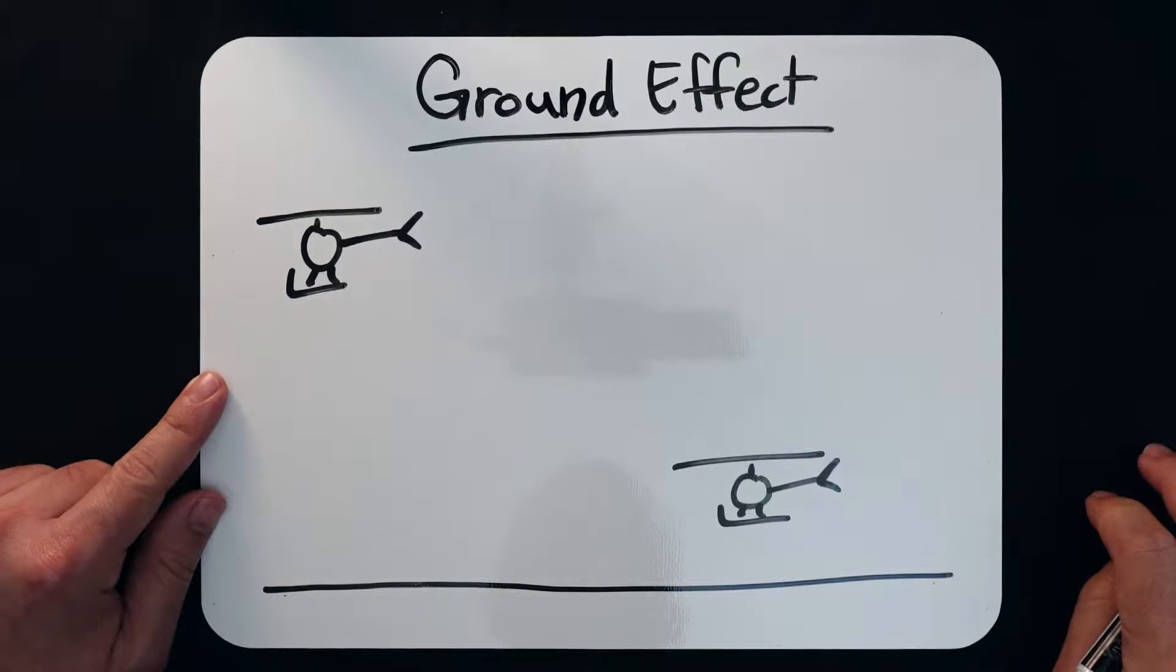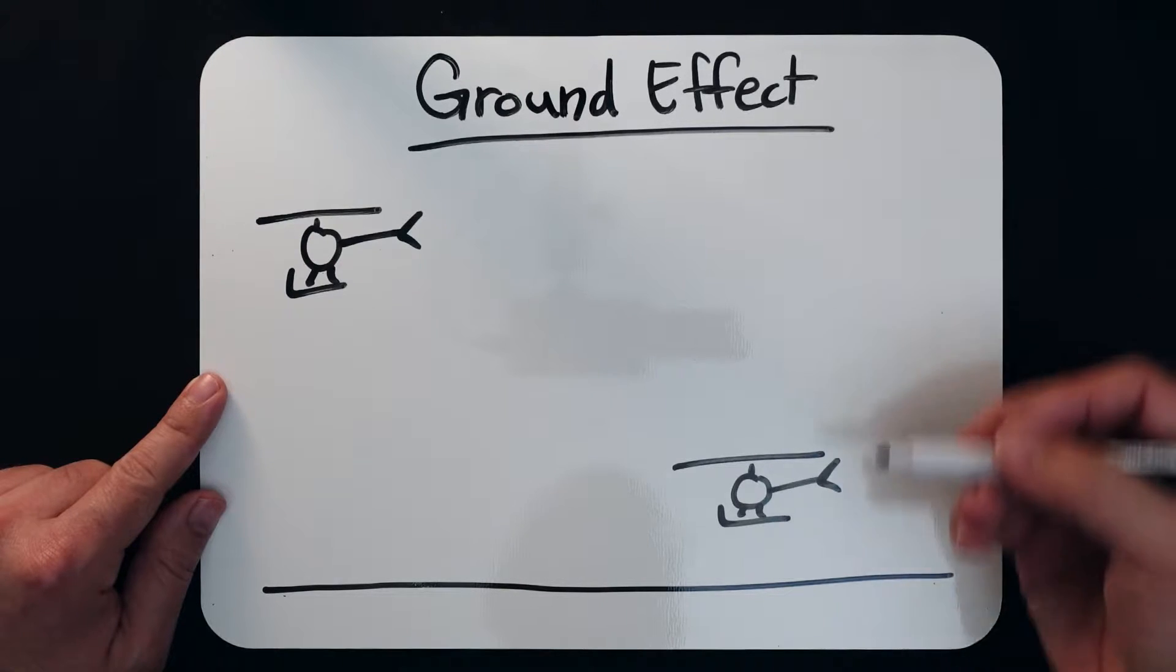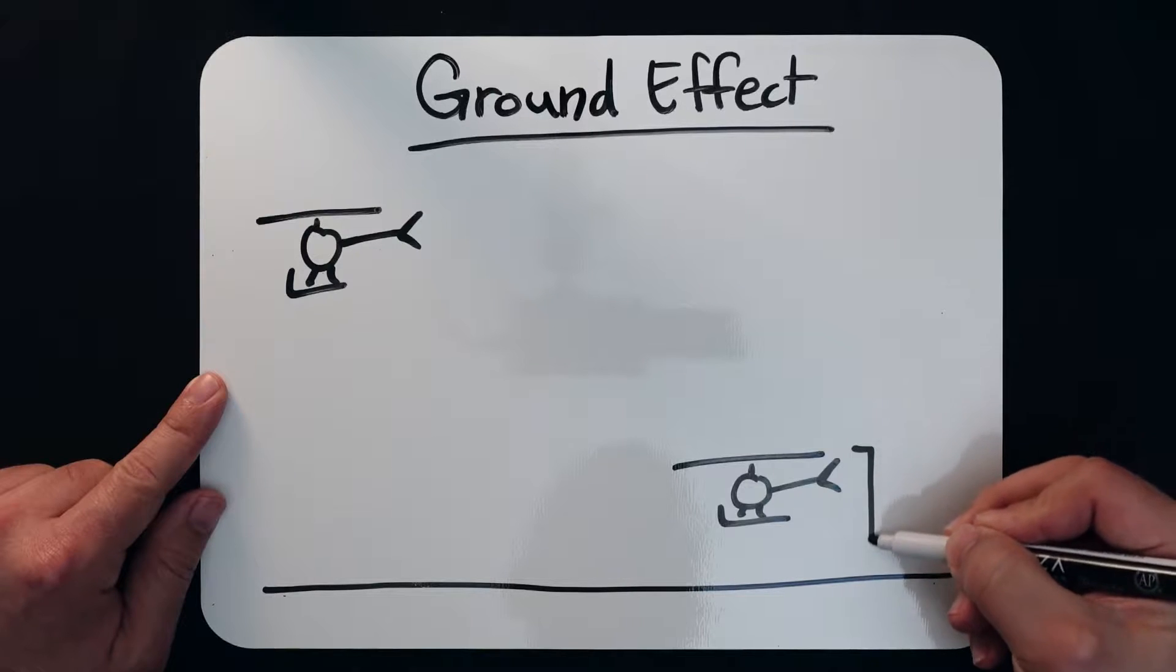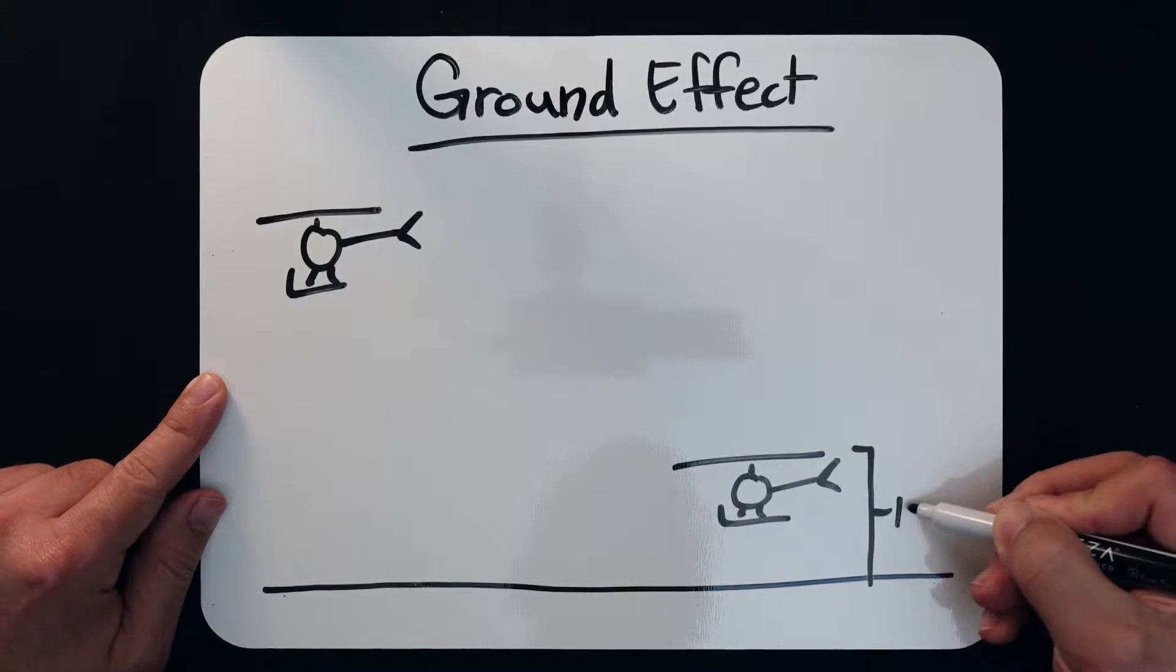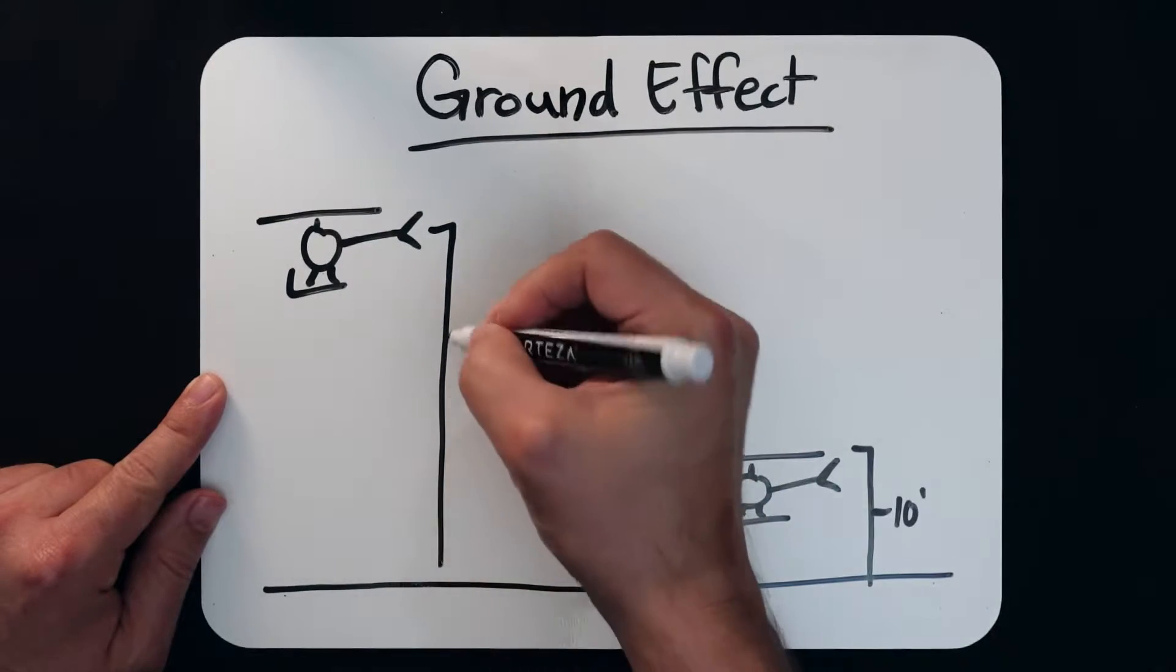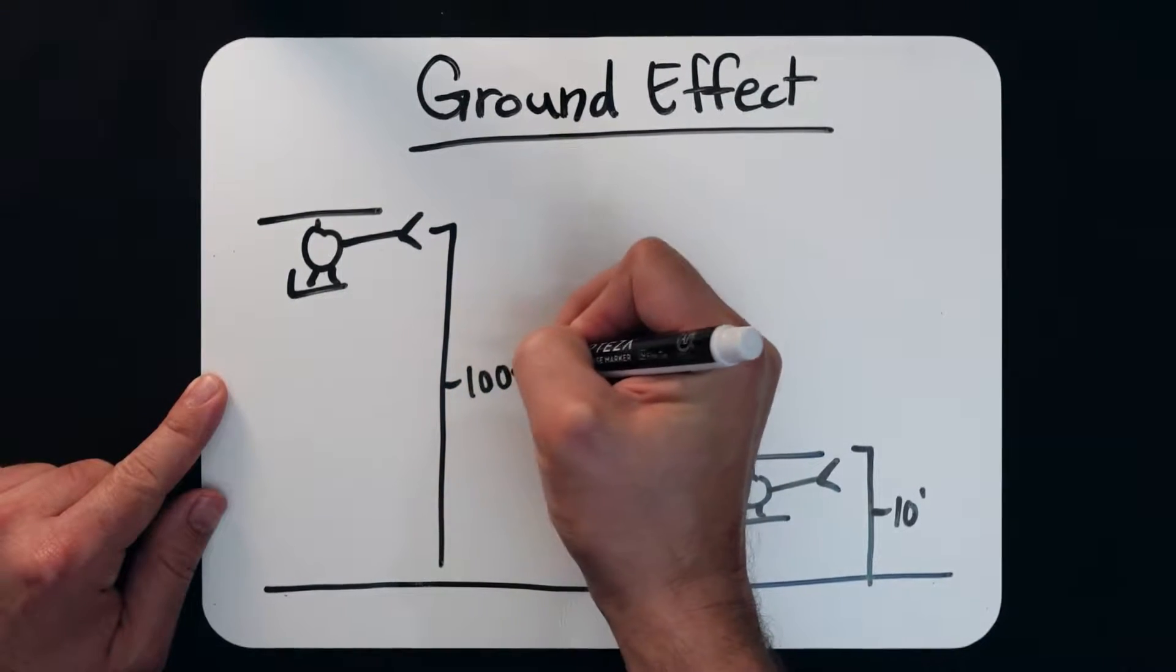Now the helicopter I fly, the Switzer 300C, has a rotor diameter of 26 feet 10 inches. So we'll want to be less than that distance from the ground. Just for simplicity, we'll say this guy is hovering at 10 feet and this guy is hovering at 100 feet.